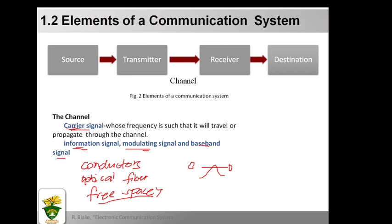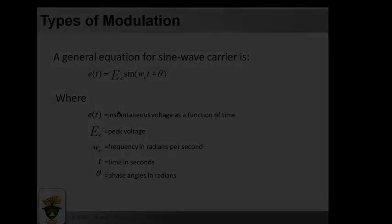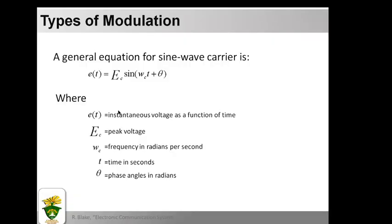The terms 'information signal,' 'modulating signal,' and 'baseband signal' are equivalent in a communication scheme involving modulated carriers. The carrier is generated at a frequency much higher than the highest baseband frequency. Usually the carrier is a sine wave, and the instantaneous amplitude of the baseband signal is used to vary some parameter of the carrier.